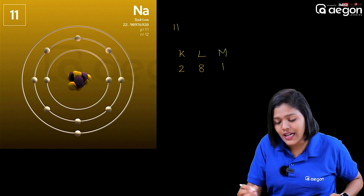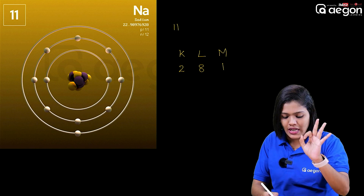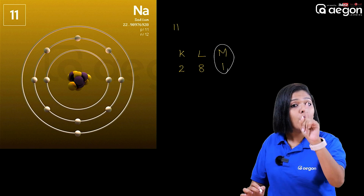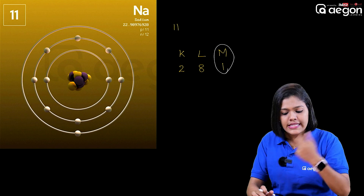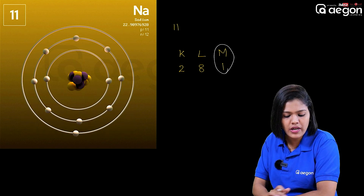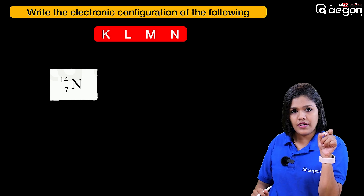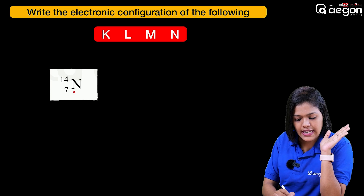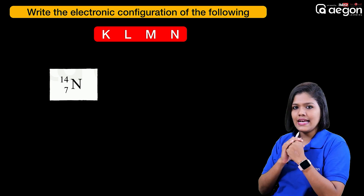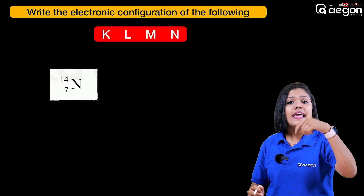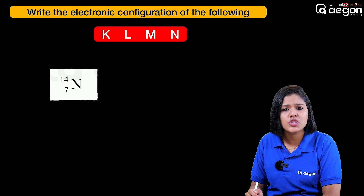We have to use this electron. This is the electron. This is the example. If you want to see this, please. The electronic configuration of the following: Nitrogen, atomic number, mass number — I want to see the electronic configuration of the electron. This is what we want to see.